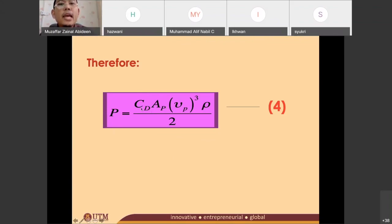And VP cube is the speed of the pedals. The speed of the pedal or the velocity of the pedal. And then rho is the density of the water. The density of the water divided by 2.